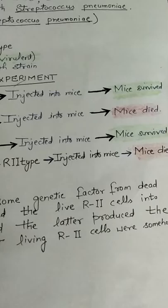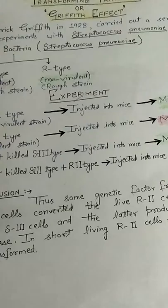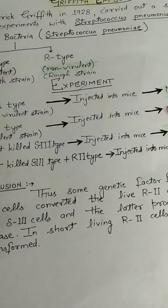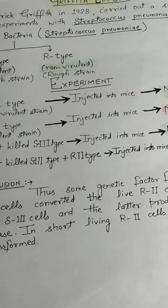He came up with his theory of transforming principle. He concluded that something was transferred from the heat-killed S strain to the R strain, which helped the R strain bacteria synthesize a smooth polysaccharide coat and become virulent. This must be due to transfer of genetic material, however he was not able to define the biochemical nature of genetic material from his experiments.